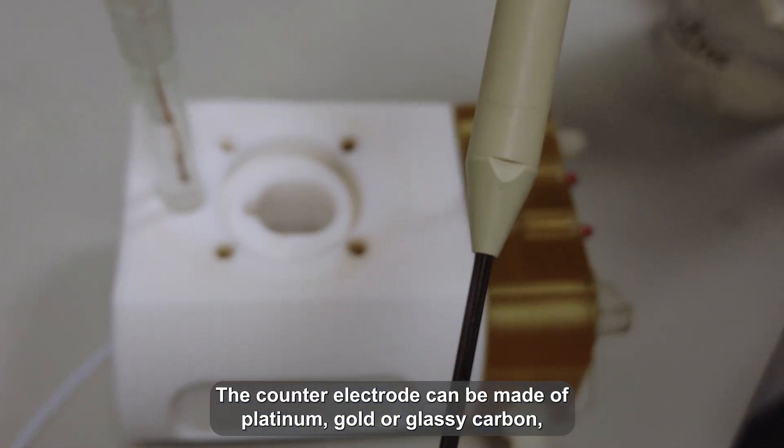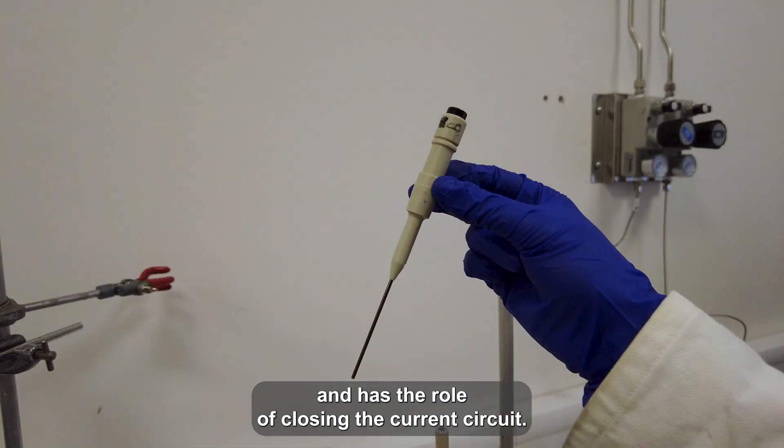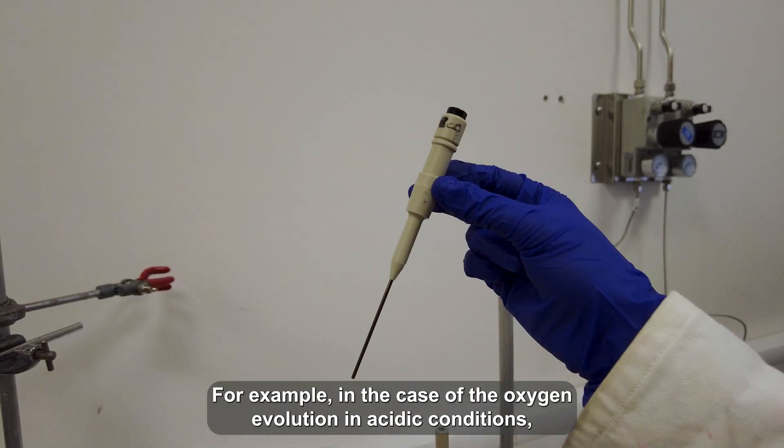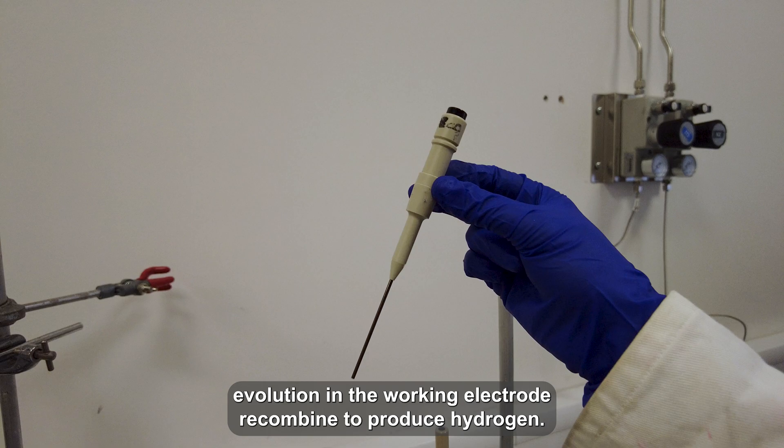The counter electrode can be made of platinum, gold, or glassy carbon, and has the role of closing the current circuit. For example, in the case of oxygen evolution in acidic conditions, the counter electrode is where the protons and electrons produced by oxygen evolution in the working electrode recombine to produce hydrogen.